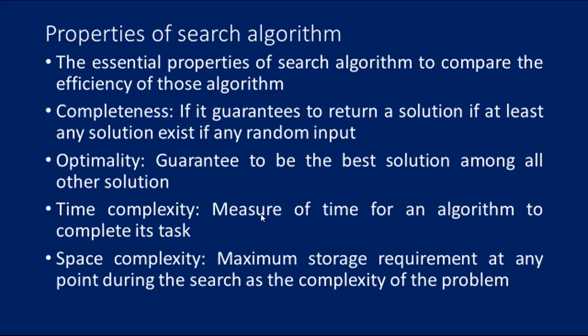The complexity of each algorithm depends on the branching factor and the maximum number of successors. These are the main points of the properties we need to consider: completeness, optimality, time complexity, and space complexity. Searching is very important to find a solution. In order to achieve a goal, we need to consider all these algorithm properties — only then can it attain the goal.